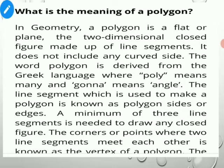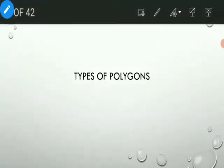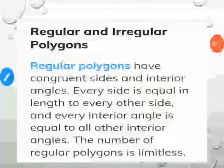The line segments used to make a polygon are known as the polygon's sides or edges. A minimum of three line segments is required to make a polygon. The corner points where two line segments meet each other are known as the vertices of a polygon. The line segments formed by joining non-adjacent vertices are called diagonals of the polygon.